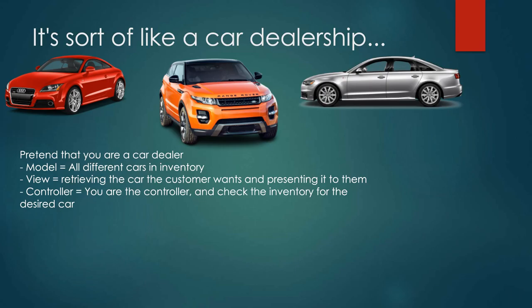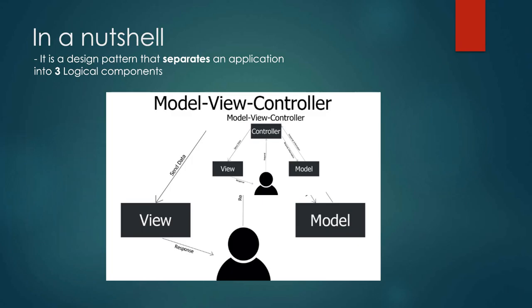So basically in MVC, a model is a representation of our data in an application. The view is the data being presented to a user, and the controller is accepting requests from the user and finds data from the model to update the view and present it to the user.